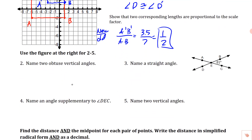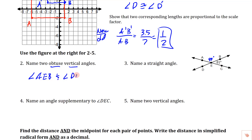Coming down to the next problem. It uses a figure with one given measurement. They say we can assume the diagram is to scale. It looks like this angle is obtuse — knowing one angle is 81°, that makes the supplement 99°. Name two obtuse vertical angles: that would be angle AEB and angle DEC.